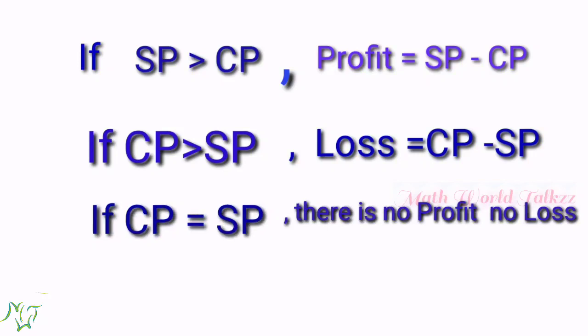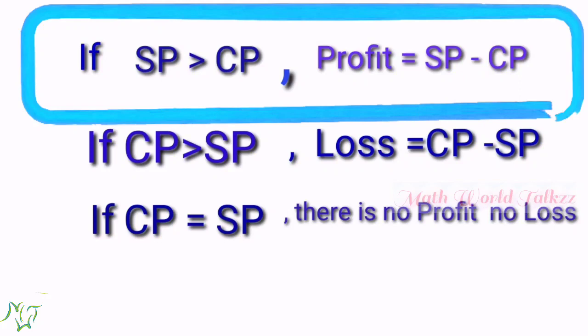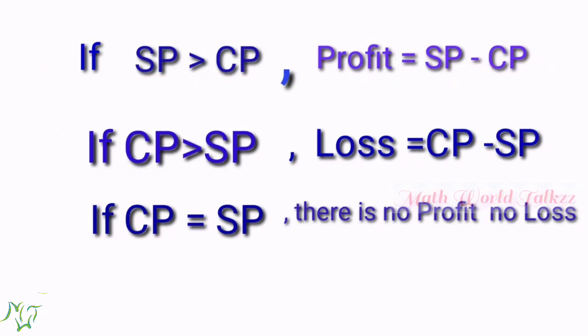Let's have a quick recap of this session. If SP is greater than CP, how can we find the profit? Profit is equal to SP minus CP.